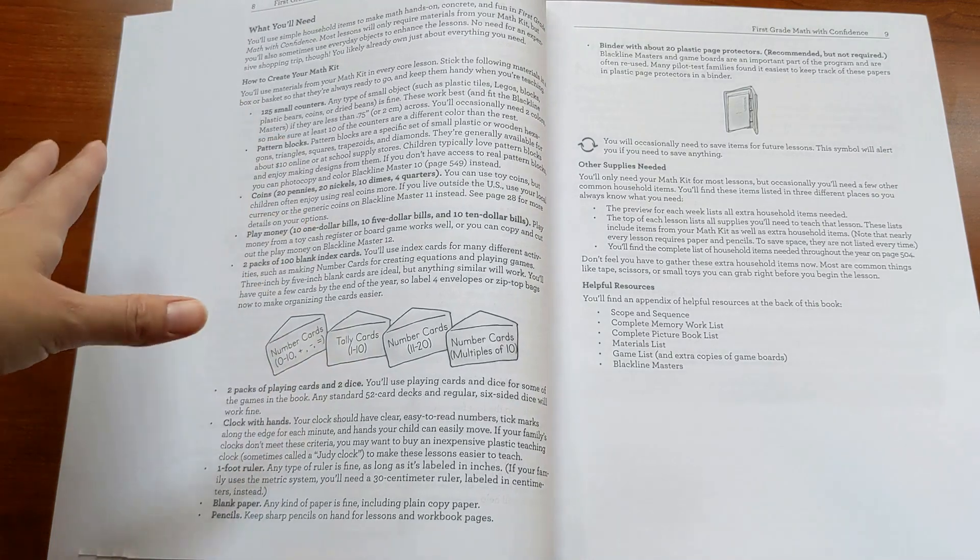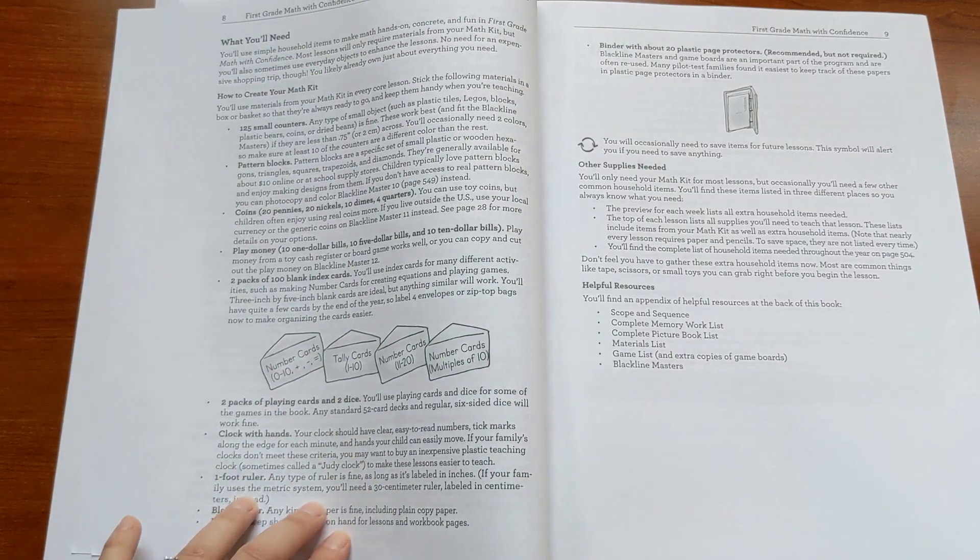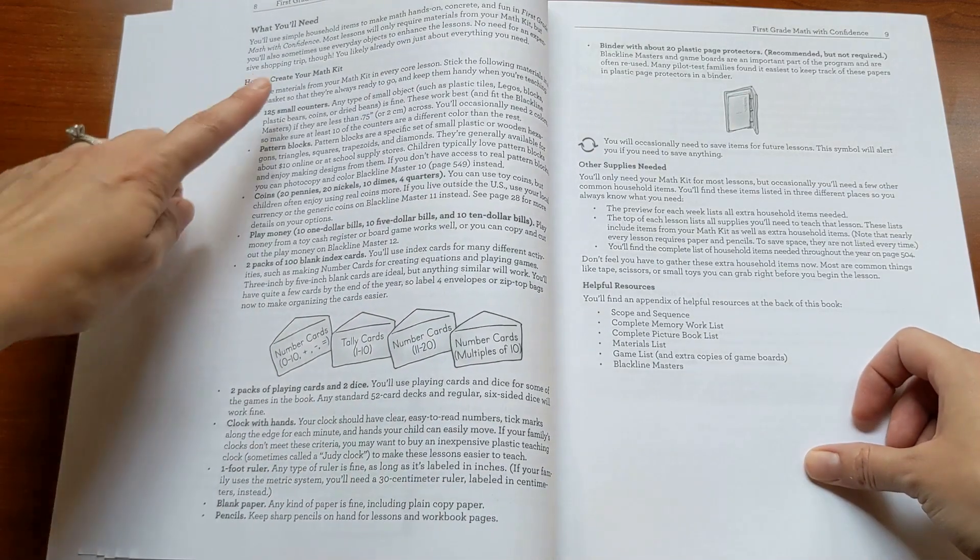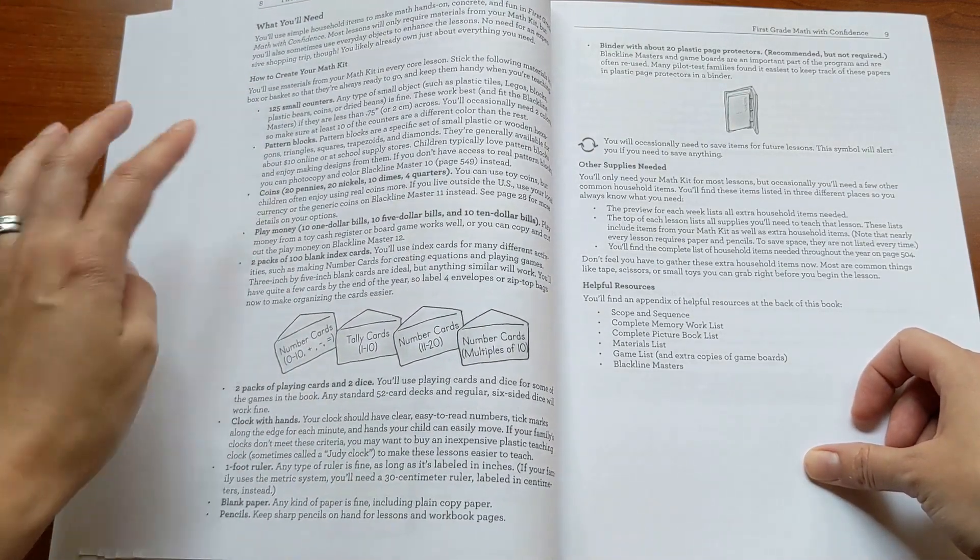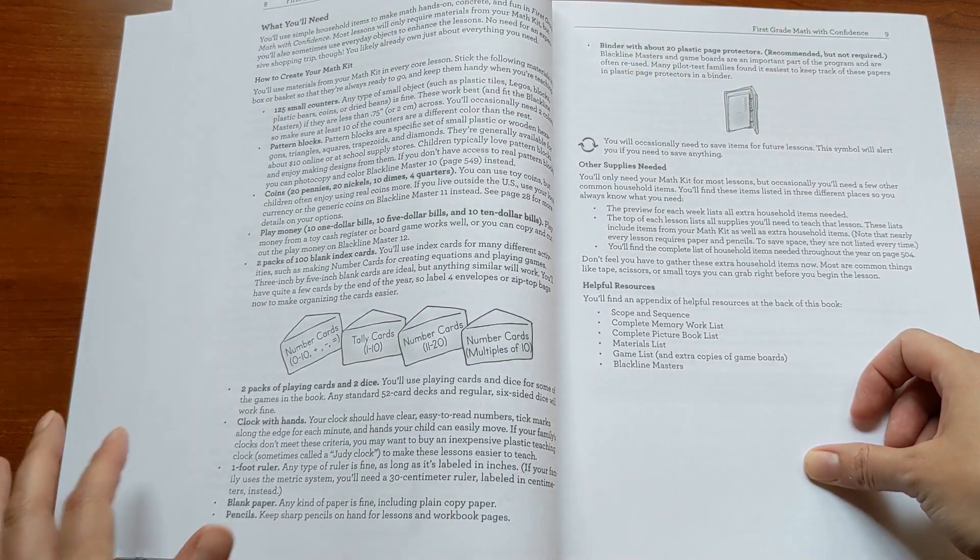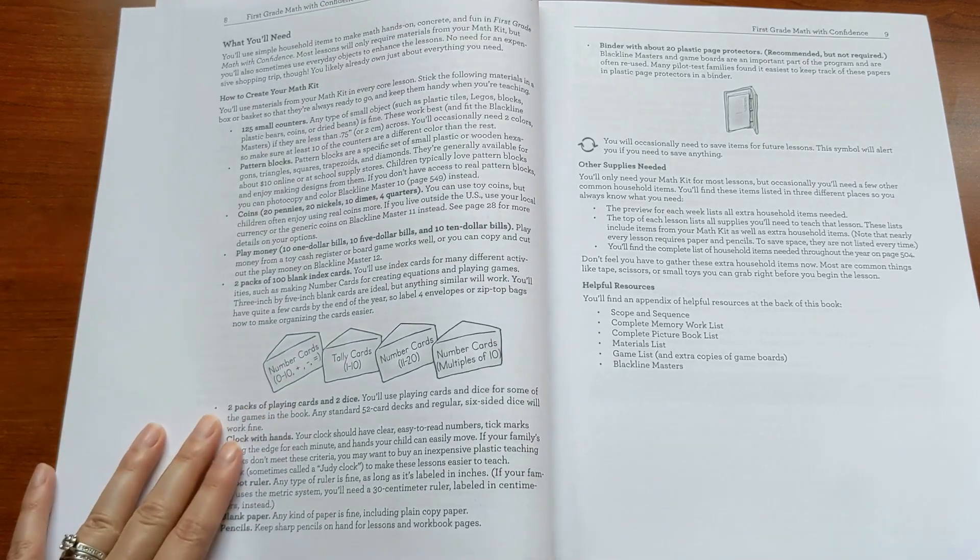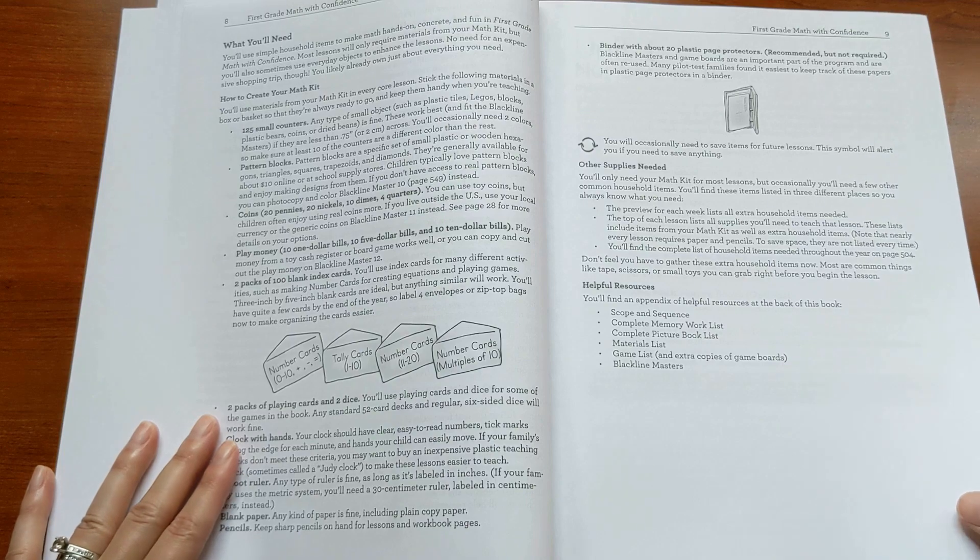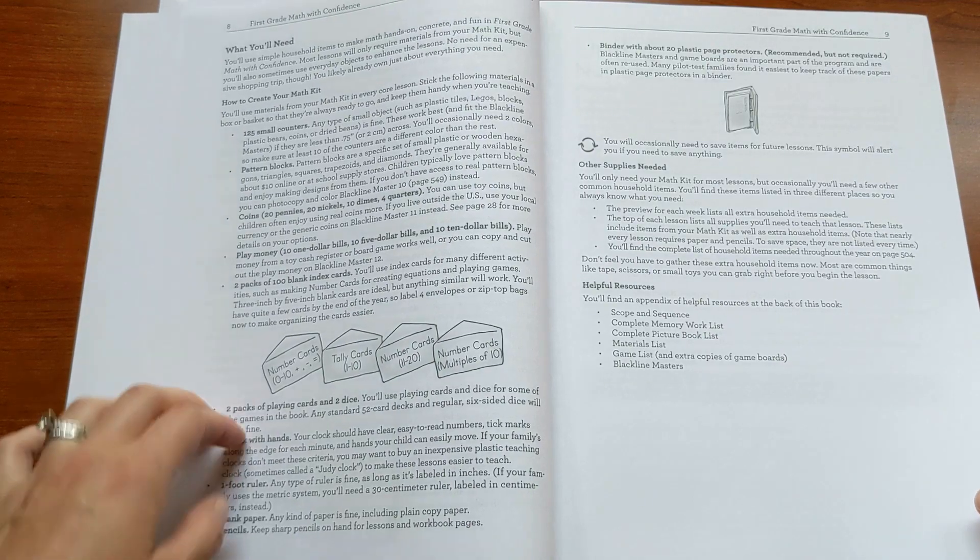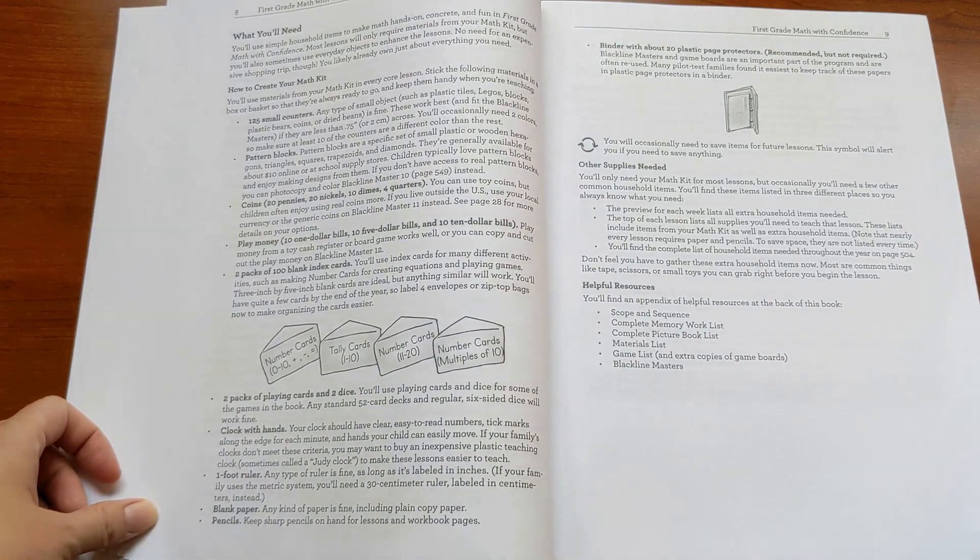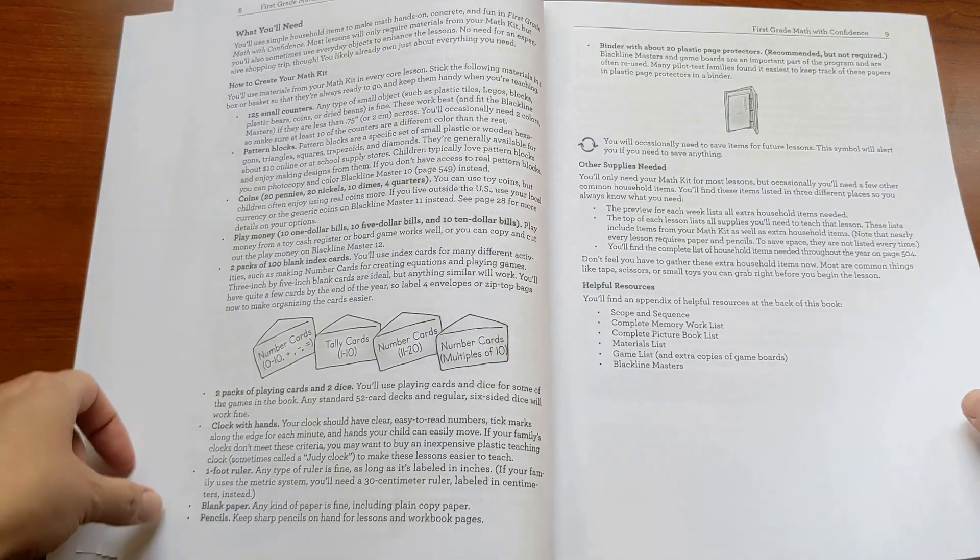And then finally in the introduction, there's a list of what you'll need. These are almost all household items you probably already have, like counters, pattern blocks, coins, play money, index cards, a clock, a ruler. Real simple stuff that you probably already have. The one thing you might need to buy is pattern blocks, but they're usually like $10 or $15 online. So very easy to find.